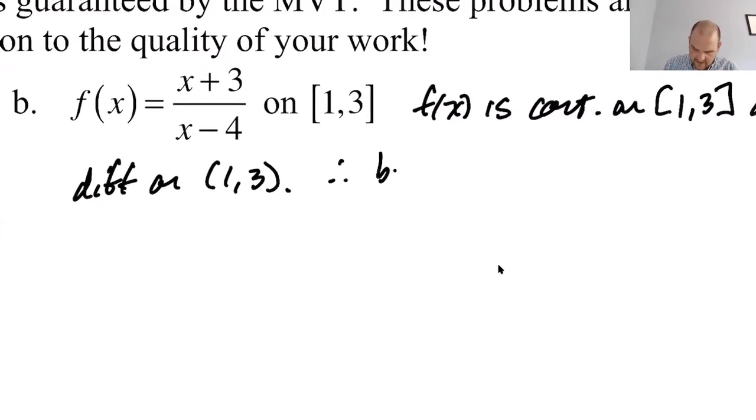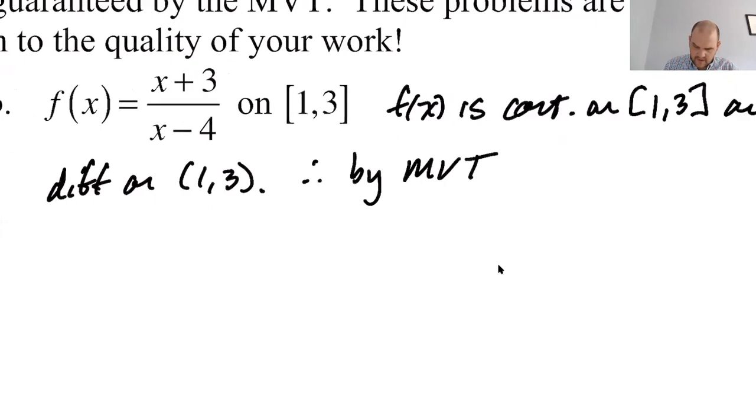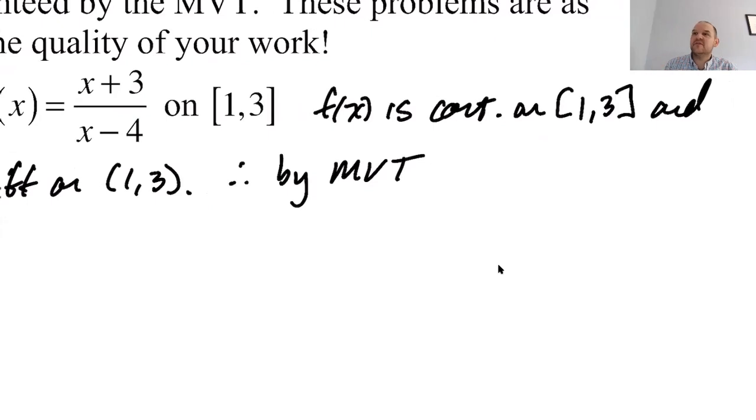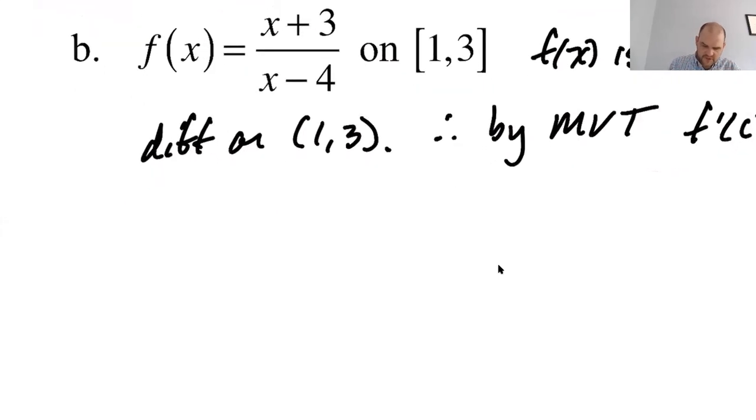So therefore by MVT, this is taking a long time to write. That's what happens in calculus. Like you know how to do everything, you got to get really good at writing everything. That's your choke point basically. By MVT, f prime of c equals f of 3 minus f of 1 over 3 minus 1 for some c. You don't do a lot of these problems. Like these problems are great. They hammer home what the MVT is, how you deal with it.